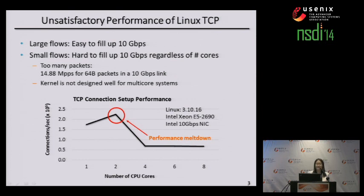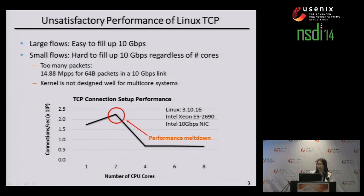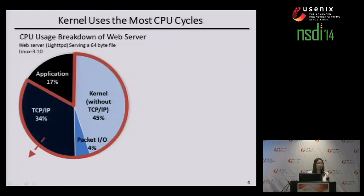To know more about the problem, we measure the TCP connection setup performance in a tight loop. In this graph, the X axis shows the number of cores and Y axis shows the number of established connections per second. You can see that performance does not scale with the CPU cores, and what's worst is that the performance collapses when we use more CPU cores. This next graph shows the CPU usage breakdown of web servers on Linux, which serve small 64-byte files.